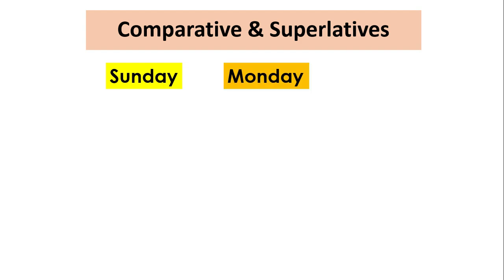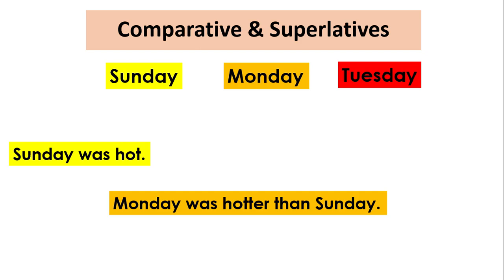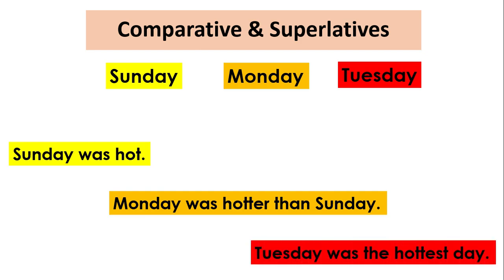Here are three days of the week: Sunday, Monday, and Tuesday. How can we compare them using comparatives and superlatives? You can say that Sunday was hot — we used only the positive degree of the adjective here. To compare Sunday with Monday, we can say Monday was hotter than Sunday. We use 'than' to compare. And when we compare Tuesday with Monday and Sunday, we can say Tuesday was the hottest day.